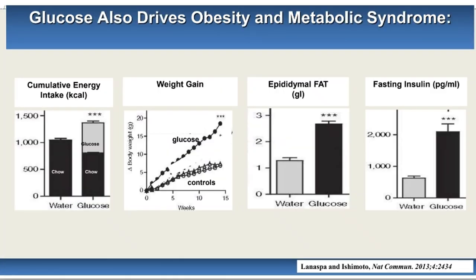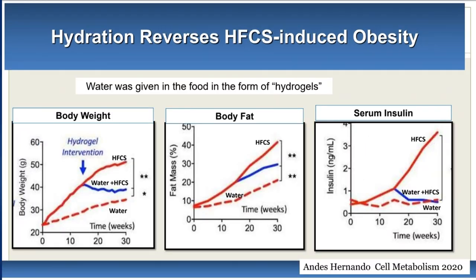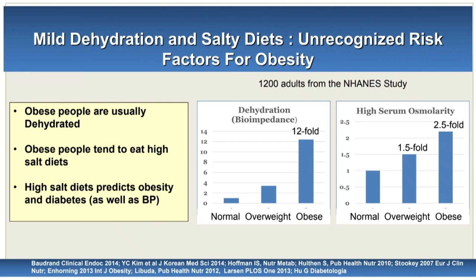Glucose also drives obesity and metabolic syndrome, and glucose converts to fructose. A study on mice knocked out the gene producing the enzyme that converts glucose to fructose. In the knockout mice with no fructose formation, they found less fatty liver compared to control. Hydration reverses fructose-induced obesity — the same study gave mice high fructose corn syrup, then gave them water in the middle, and there was a decrease in body weight, fat mass, and insulin. Mild dehydration from salty diets is an unrecognized risk factor for obesity, and people with obesity are usually dehydrated and tend to eat high salt diets.